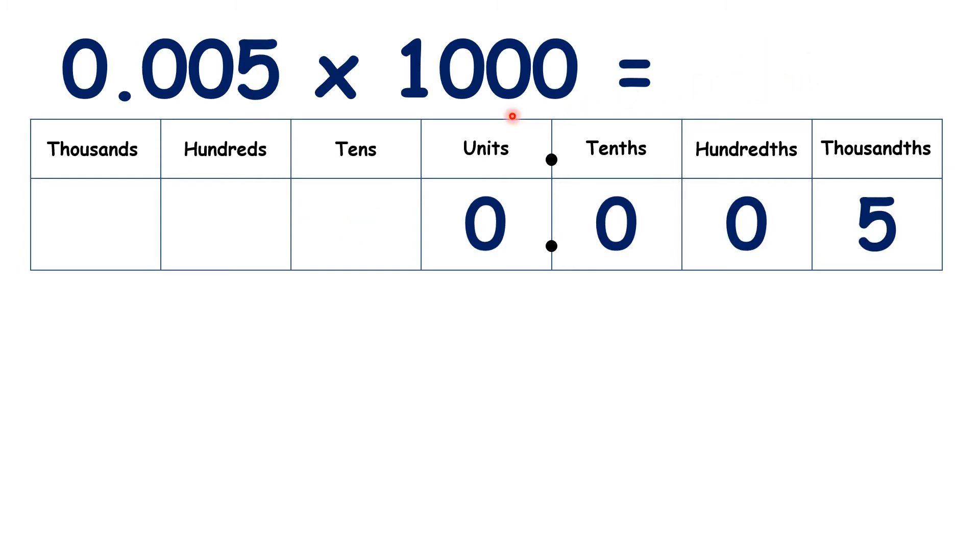Now, let's multiply by 1,000, and when we multiply by 1,000, the digits move three places to the left. So if we move three places across, we now have 0, 0, 0, 5.